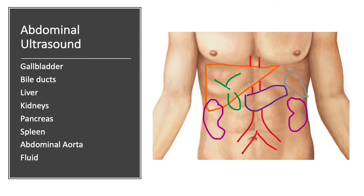Firstly, the gallbladder. The gallbladder in this image is the green coloured C-shaped structure just below the liver. One of the most common reasons why we scan the abdomen is for gallstones, which commonly irritate the gallbladder and cause right-sided or central abdominal pain which can radiate through the abdomen and is worsened after eating a meal.